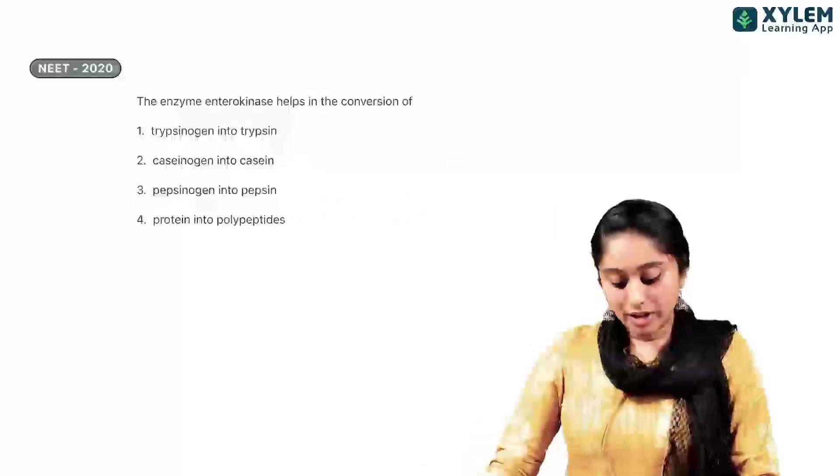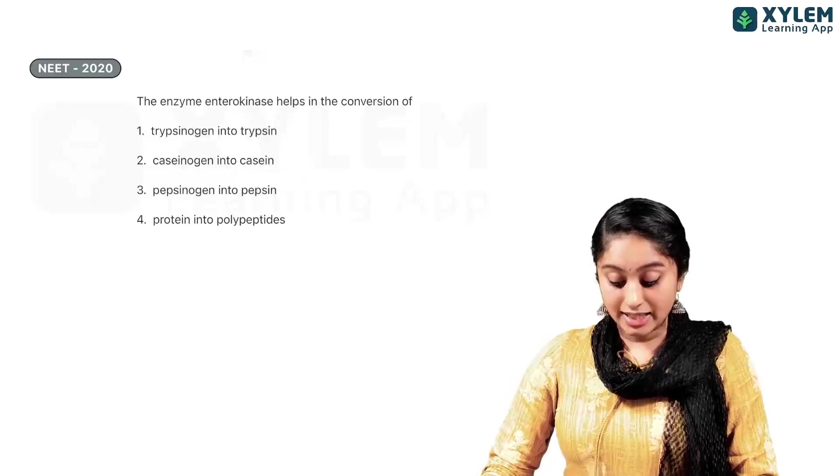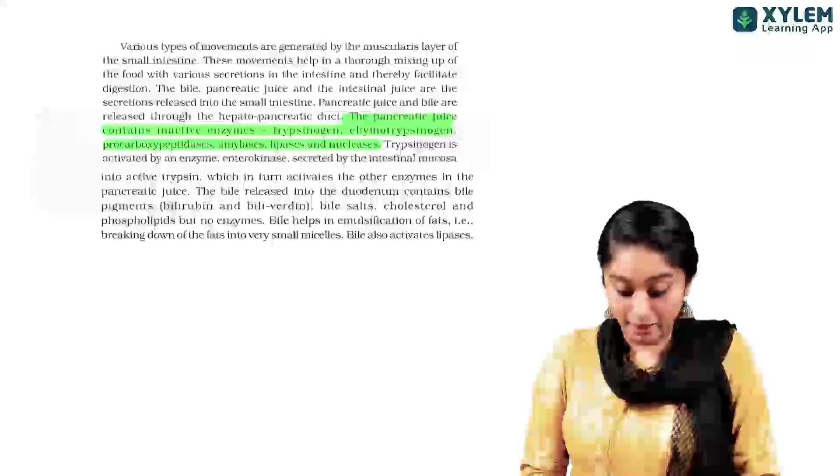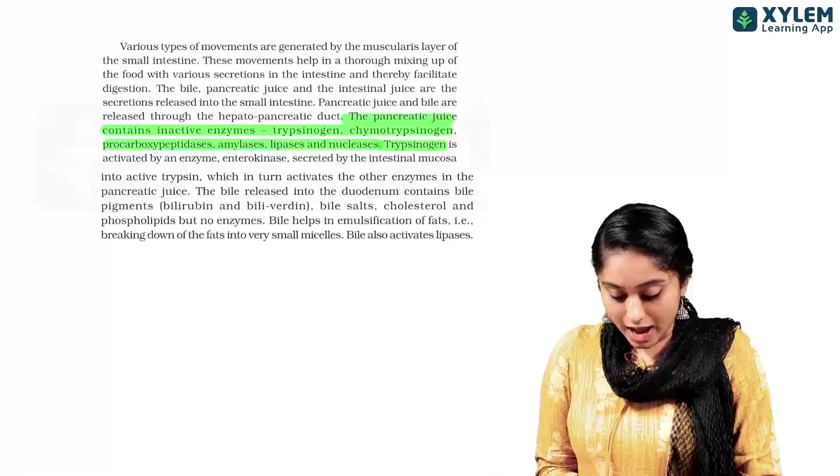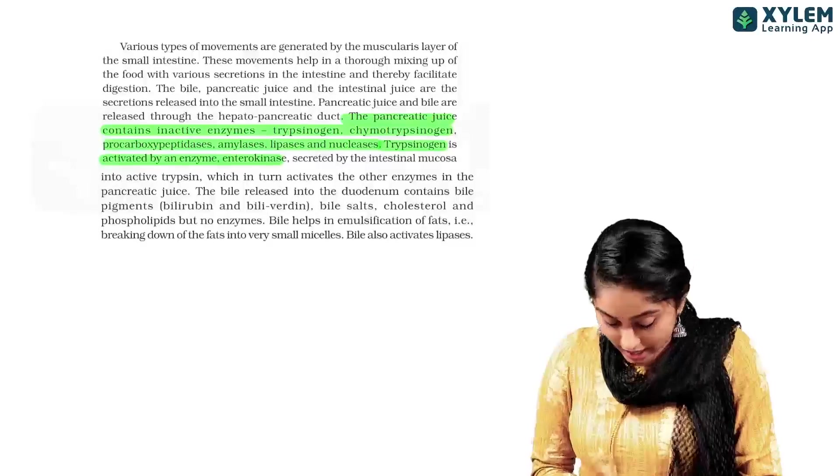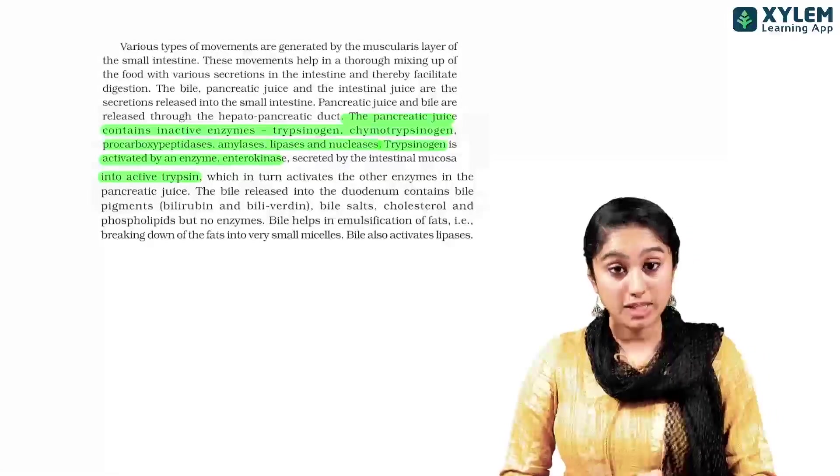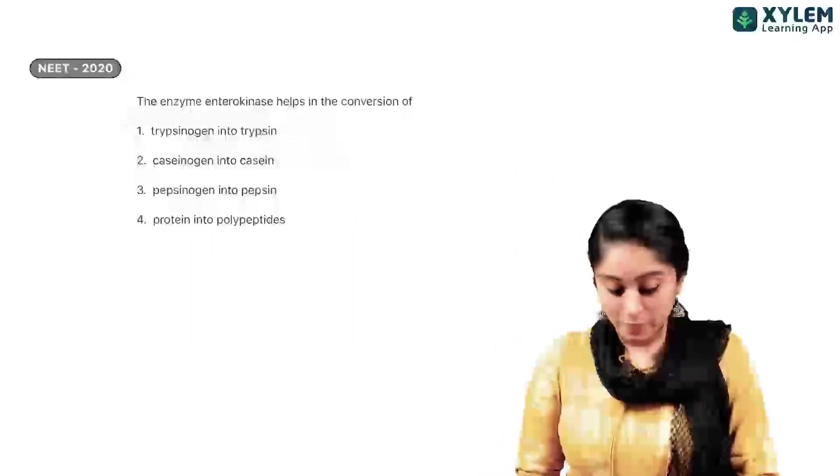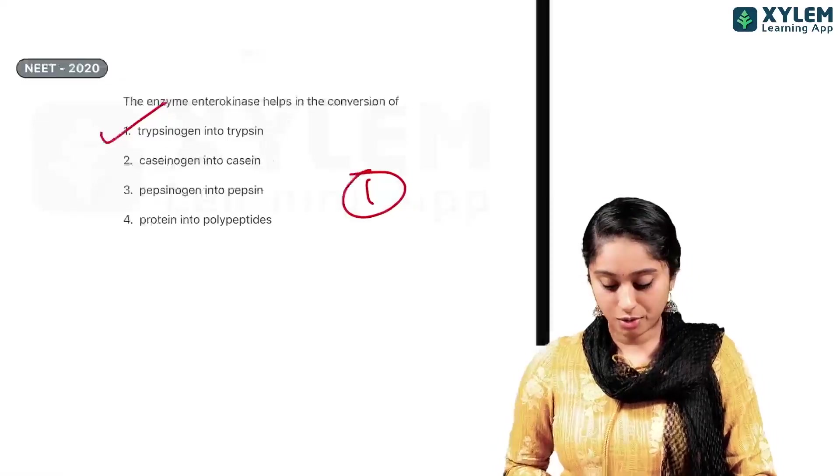Okay. Fine. Now, coming to this question, that appeared in 2020, the enzyme enterokinase helps in the conversion of what? Which conversion does it help in? Here, it's given trypsinogen. Activated by an enzyme enterokinase, converts into active trypsin. So, trypsinogen to trypsin, enterokinase catalyze. So, my option here will be option 1.